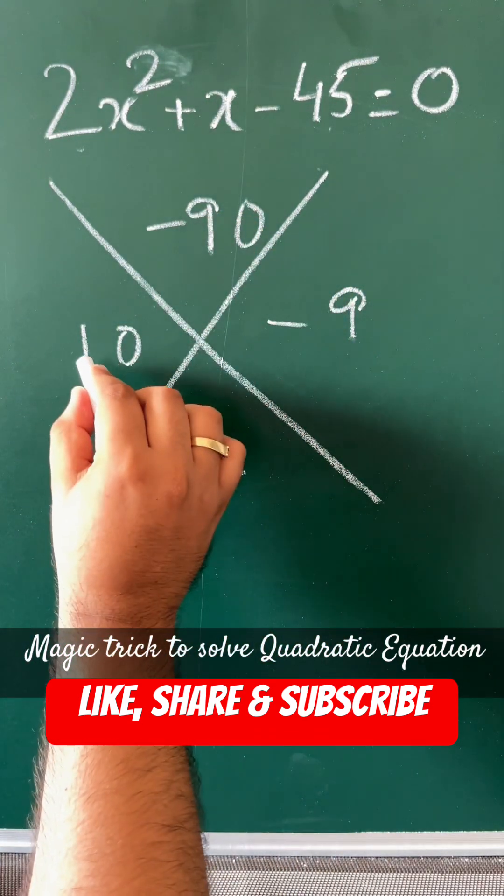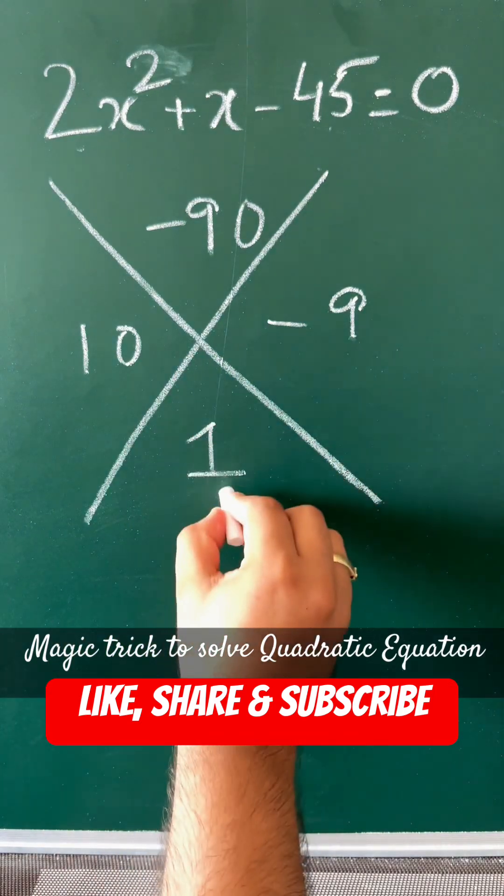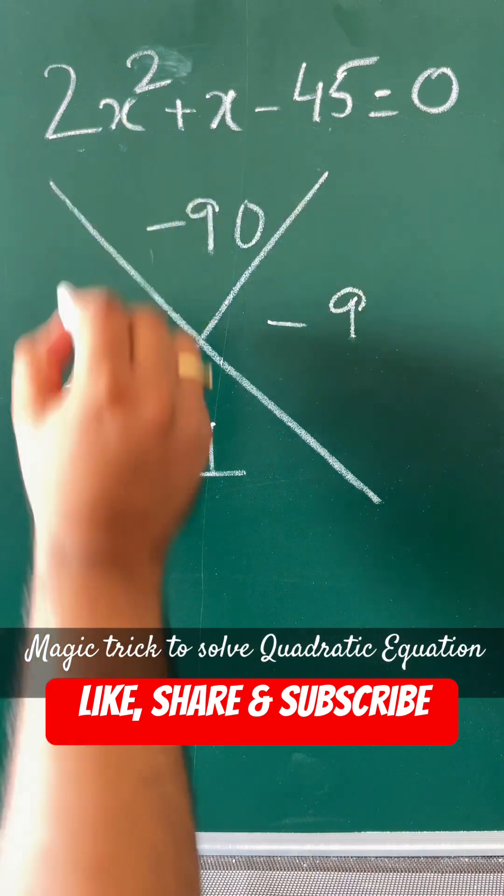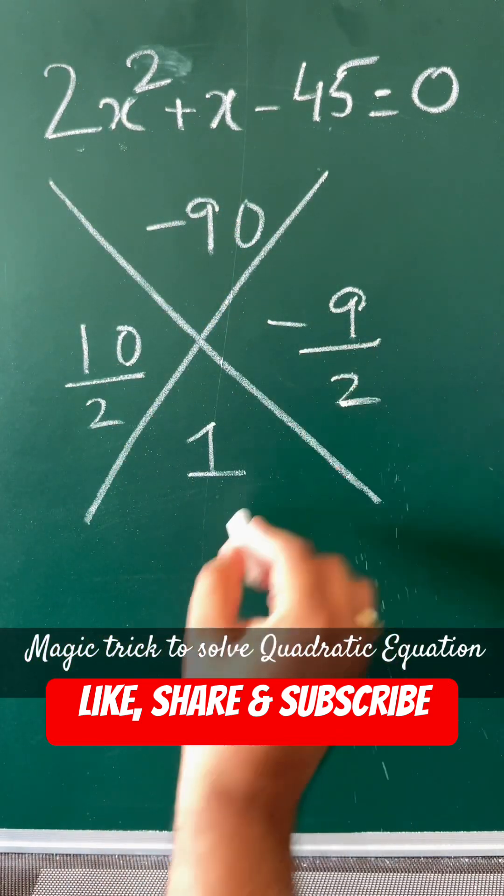10 × (-9) = -90, and 10 + (-9) = 1. Now divide them by the coefficient of x², which is 2. You're getting 5 and -9/2.